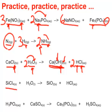Fourth equation: silicon chloride reacts with water to make silicon dioxide and hydrochloric acid. Silicons look fine. But chlorines: four on the left, one on the right. Put a 4 in front of HCl, giving four chlorines and four hydrogens. Hydrogens in water are counted by twos, so put a 2 in front of H2O — two H2s gives four hydrogens. That also gives two oxygens, which matches the two oxygens in silicon dioxide.